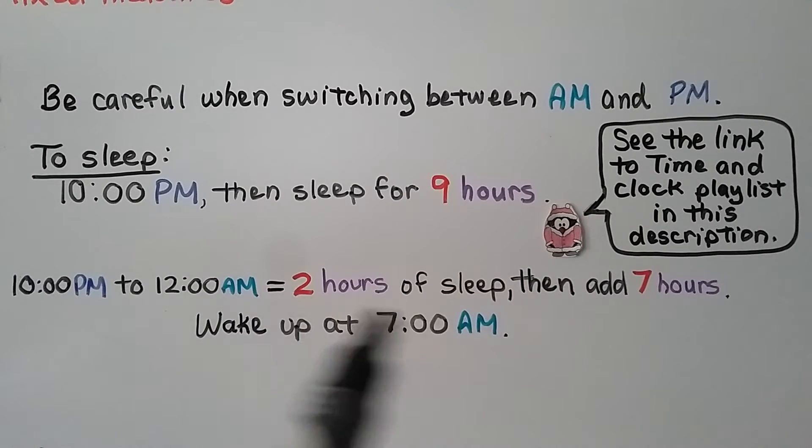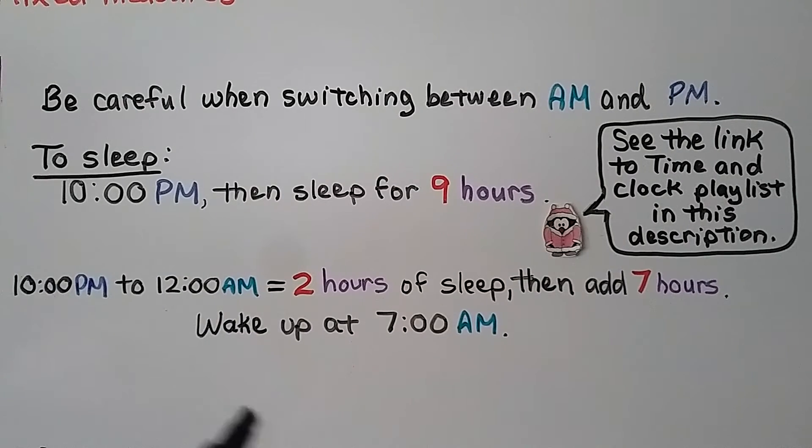To get to nine hours total, we need to add seven more hours. So from midnight, adding seven hours, that would put us at 7 o'clock AM when they woke up.